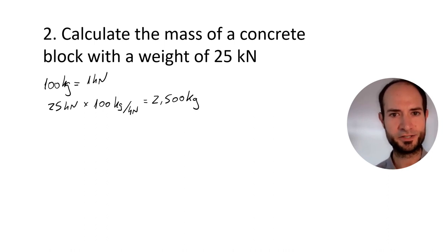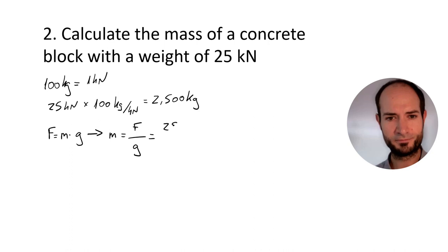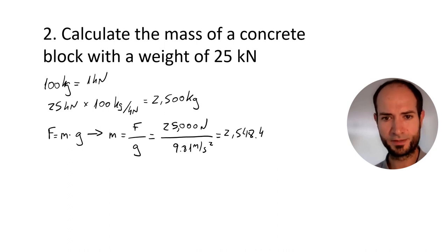Using the equation, we know force equals mass times gravity. We have the force and gravity, so mass equals force divided by gravity. 25 kilonewtons equals 25,000 newtons divided by 9.81, which equals 2548.4 kilograms.